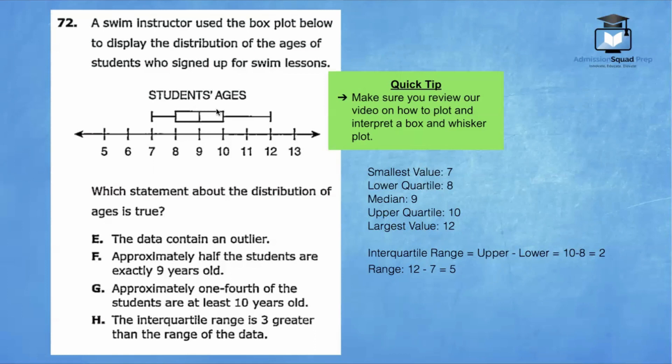And then we have eight and 10. We call this the lower quartile or the first quartile. And we call the 10 the third quartile or the upper quartile. To calculate the interquartile range, we go ahead and subtract 10 minus eight, and that gives us two. But to calculate the range of the entire data set, we have 12 minus seven, which is five.